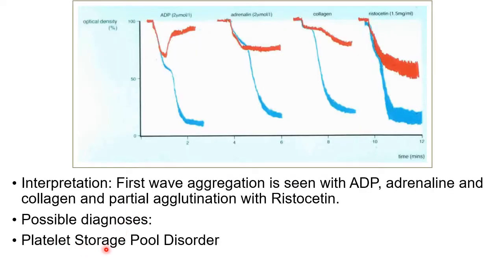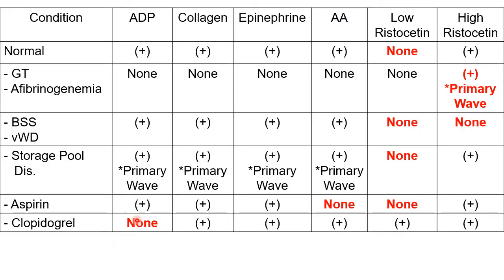In platelet storage pool disorder, almost all agonists show missing secondary waves. You may see primary waves with ADP, epinephrine (also called adrenaline), and collagen. With ristocetin, only partial agglutination is seen. The key results in red in the table are what we need to remember as distinctive findings for each disorder.